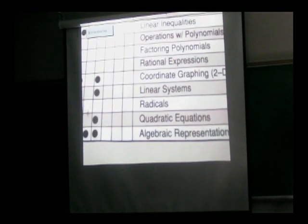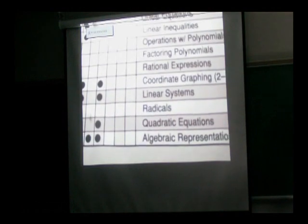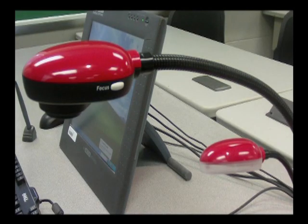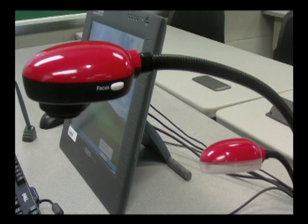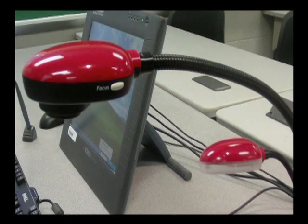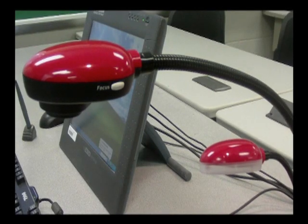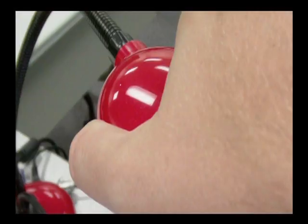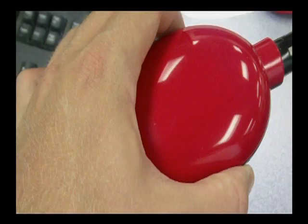Both the camera and the lamp can be maneuvered easily. To adjust the focus of the projected image, simply press the two white focus buttons on either side of the camera simultaneously. This will automatically adjust the focus of the projected image.